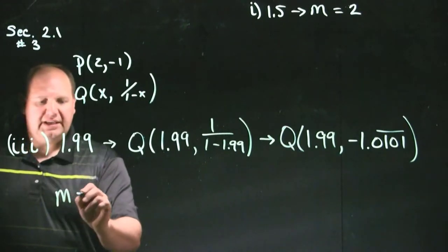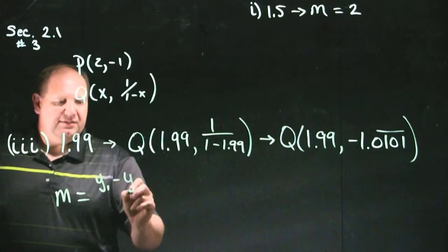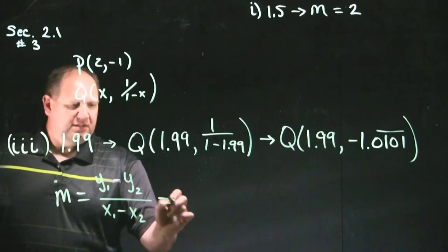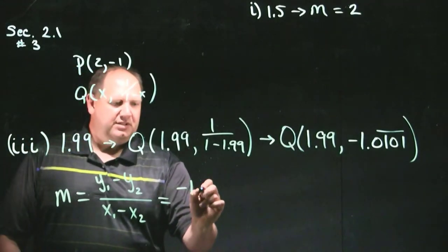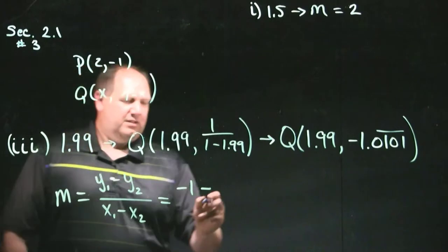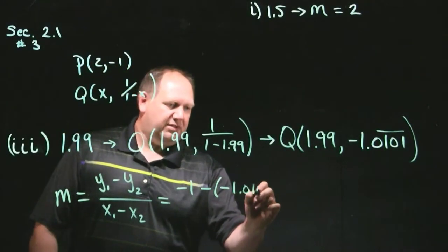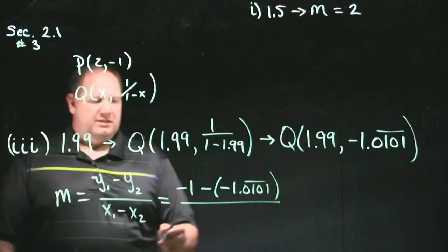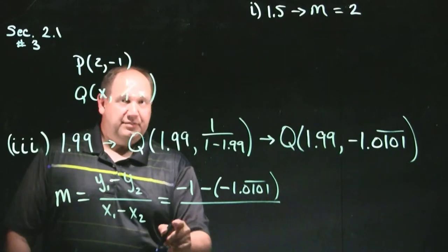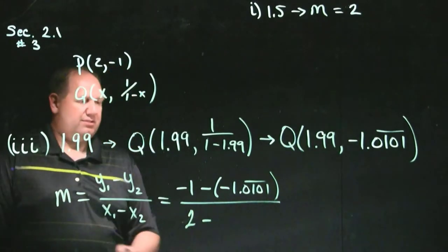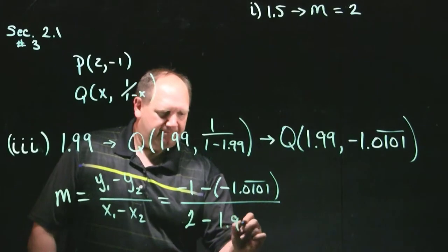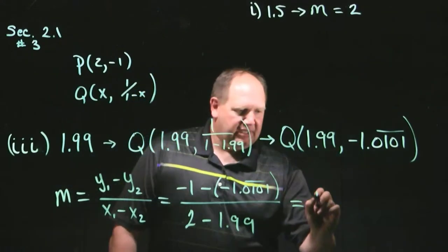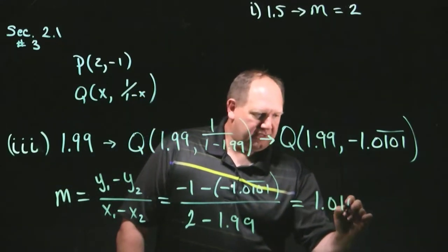I get m and the rise over the run. So this is minus 1 minus, minus 1.0101 repeating, all divided by 2 minus 1.99. And when I simplify that to 6 decimal places, I get 1.010101.